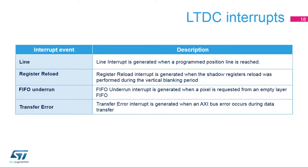Line interrupt: generated when a programmed line position is reached. Register reload interrupt: generated when the shadow registers are relocated during the vertical blanking period. FIFO underrun interrupt: generated when a pixel is requested from an empty layer FIFO. Transfer error interrupt: generated when an AHB bus error occurs during data transfer.